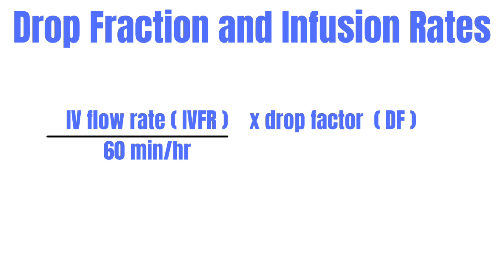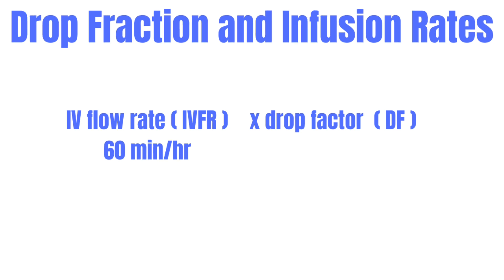For drop factor and infusion rates, here is the formula: IV flow rate divided by 60 minutes per hour, multiplied by the drop factor. You're basically just plugging your question values into this formula to get your answer.